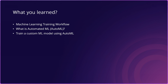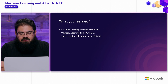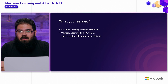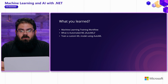So in this video, there are a few things you learned: you took a look at what the machine learning training workflow generally looks like, you learned how automated ML or AutoML can help you automate that process, and we went over an example of how you can use AutoML to automate training custom machine learning models — specifically for categorizing or triaging GitHub issues. Thanks for watching. See you in the next video.